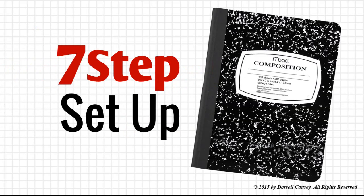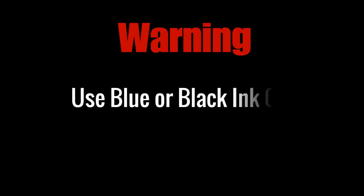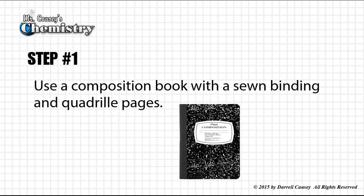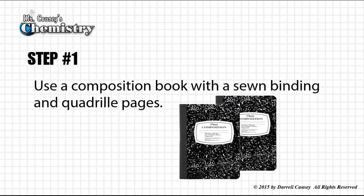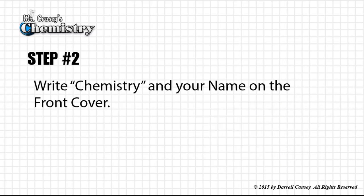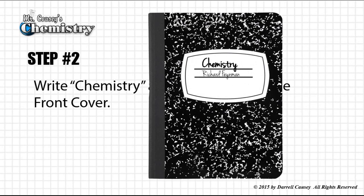So the seven steps to set up your lab book. Step number one, use a composition book with a sewn binding and quadrille pages. And that means graph paper. Step number two, write chemistry and your name on the front cover. Let's look and see how that's done. Chemistry and your name.